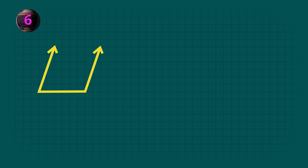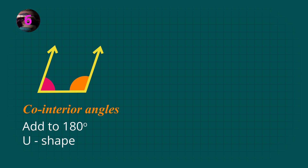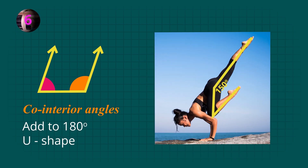Now look closely at the angles inside the U shape. One angle is obviously larger than 90 degrees, and it's larger in size than the other angle. These two angles add to 180 degrees. These are called co-interior angles. Co- means together, interior means inside, so co-interior angles are together inside the U shape. In this example, this angle is 150 degrees, so the other angle inside the U shape must be 30 degrees.